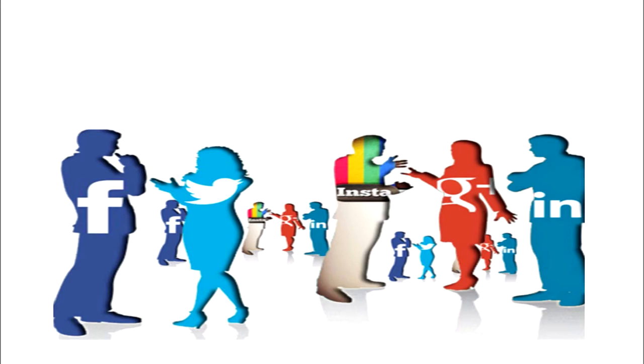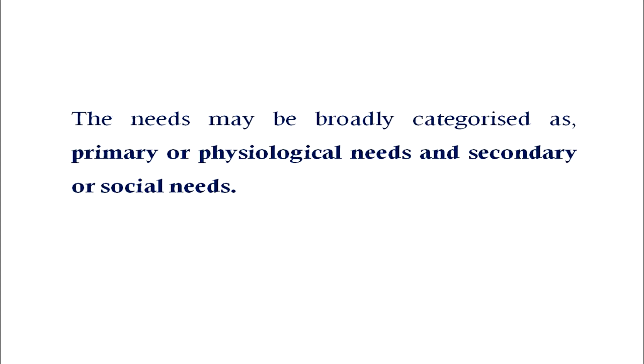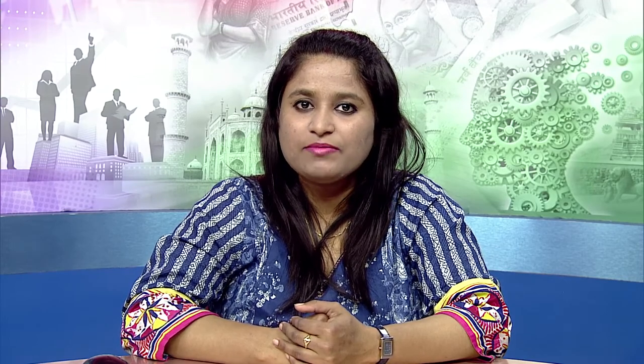Other social needs include need for prestige, status, affection, self-esteem and so on. A person becomes more aware of his needs when they are not fulfilled. When you are hungry you need food, and when you are thirsty you need water. Needs may be broadly characterized as primary or physiological needs and secondary or social needs. Needs for food, water, sex, sleep and rest, and elimination are primary needs. Needs for achievement, affiliation, and power are examples of social needs.